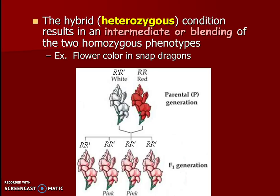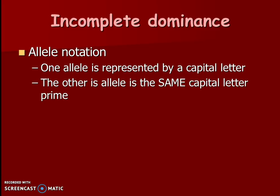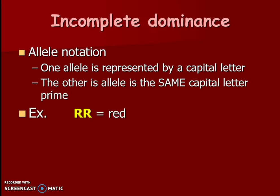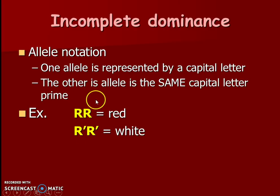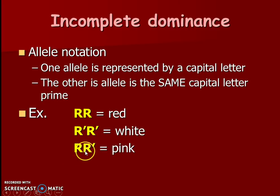Because this is so different, we can't use regular uppercase and lowercase lettering, so we're going to use a different allele notation. One allele is going to be a capital letter and the other allele is going to be a capital letter with a prime symbol — a prime symbol is just an apostrophe. In our snapdragon example, red is big R and white is R prime. We could have done it the other way around with W and W prime. These are our two homozygous versions.